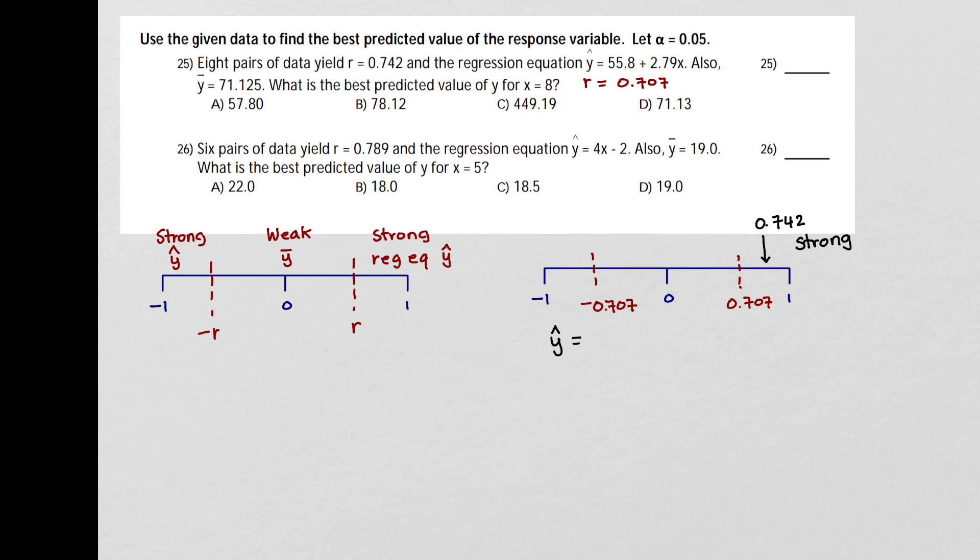So for that, I'm going to calculate y hat. And I use the equation 55.8 plus 2.79 times x. And in the problem, it tells us that x is equal to 8. So we're trying to find the value of y based on an x value of 8. And when I calculate that, we get 78.12. So b would be the correct answer here.